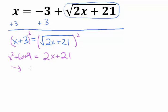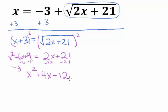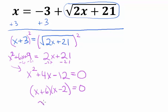Now I'm left with x squared plus 6x plus 9 equals 2x plus 21. It's a quadratic equation, so let's get all terms on one side. Subtracting 2x and 21 from both sides gives x squared plus 4x minus 12 equals zero. This factors as (x plus 6)(x minus 2), giving us x equals negative 6 or x equals 2.